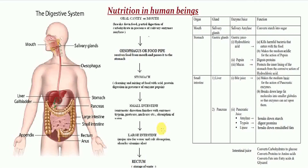Since the food is present in the buccal cavity for a very short time, digestion in the mouth remains incomplete. This incompletely digested food enters from the mouth into the esophagus. Food is swallowed with the help of the tongue into the esophagus, also called the food pipe. As soon as food enters the esophagus, its muscles start contracting and expanding rhythmically — this is called peristaltic movement — pushing the food from the esophagus into the stomach.